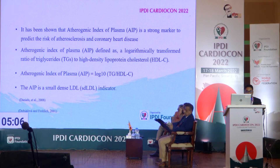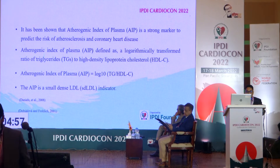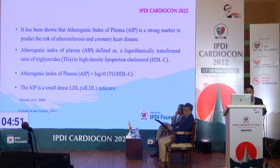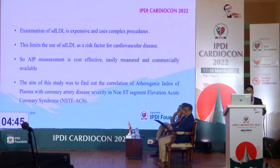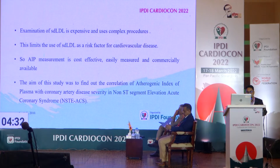Atherogenic index of plasma is defined as a logarithmically transformed ratio of triglyceride to high-density lipoprotein cholesterol: AIP equals log(triglyceride / HDL concentration). AIP is a small dense lipoprotein indicator. Examination of small dense lipoprotein is expensive and uses complex procedures, which limits its use as a cardiovascular risk factor. AIP measurement is cost-effective, easily measured, and commercially available. The aim of this study is to find out the correlation of atherogenic index of plasma with coronary disease severity in non-ST segment elevation acute coronary syndrome patients.